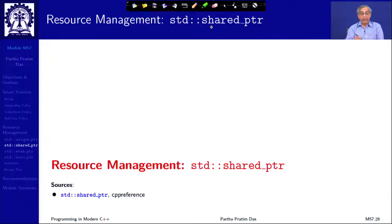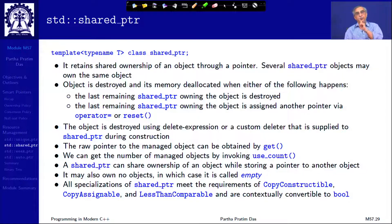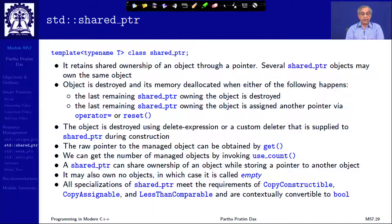Shared pointer is the most interesting. Multiple pointers can point to the same object in a shared collaborative manner. The managed object gets destroyed only when the last shared pointer pointing to it is destroyed. Otherwise, as long as shared pointers remain that manage the object, other shared pointers can be destroyed without destroying the object. If you assign, the ownership gets copied, so the reference count increases. If you reset, the ownership gets released.